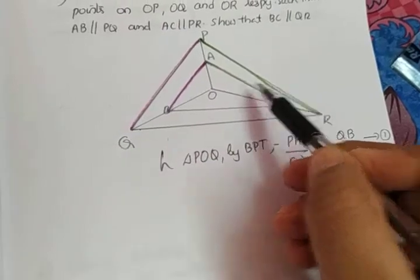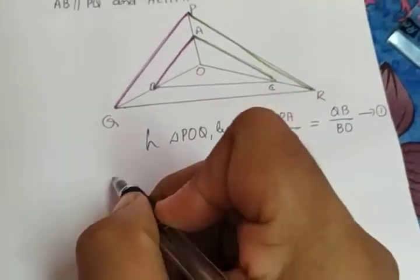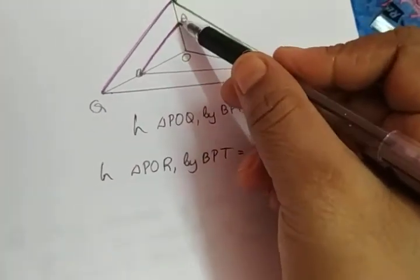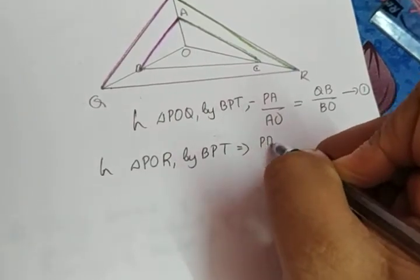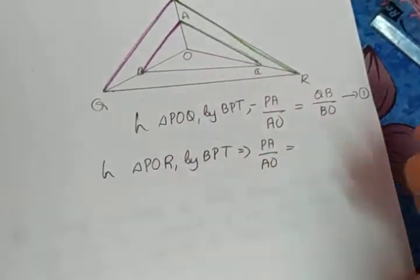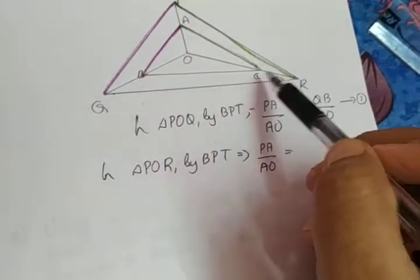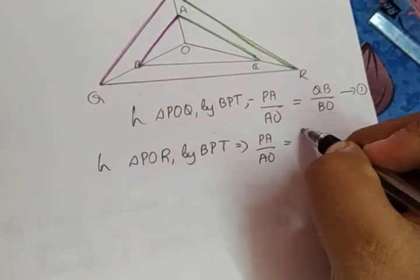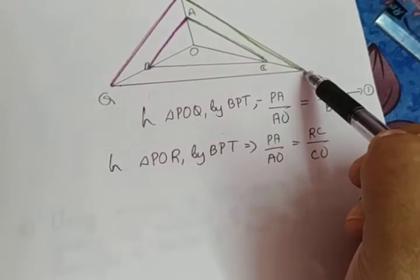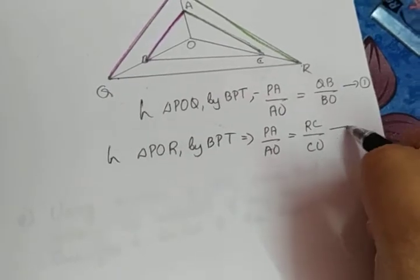The next parallel pair given is AC parallel to PR. The triangle in which these two lines are parallel is triangle POR. So in triangle POR, by BPT, we can write: OA divided by AR is equal to OC divided by CR — because if we start from this side, we have to start from the same side on the other. Let this be equation number 2.